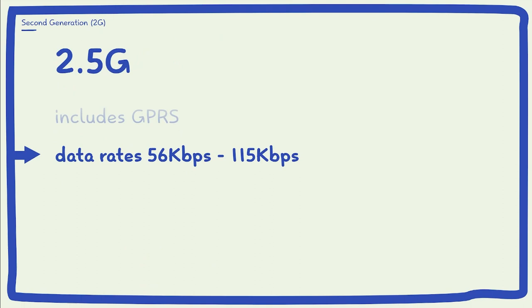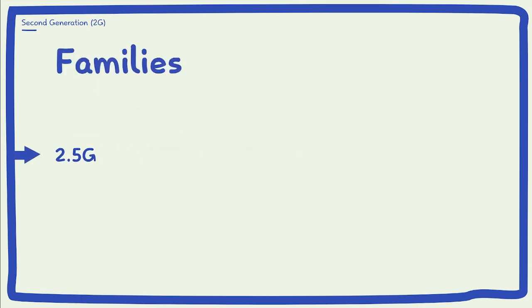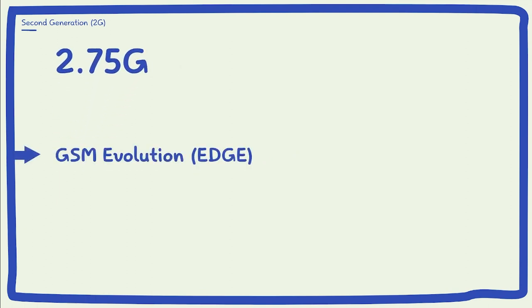They offer data rates ranging from 56 kbps to 150 kbps and allow for email and web browsing as well as the use of camera phones. 2.75G technologies such as GSM Evolution were invented and developed by Cingular AT&T.